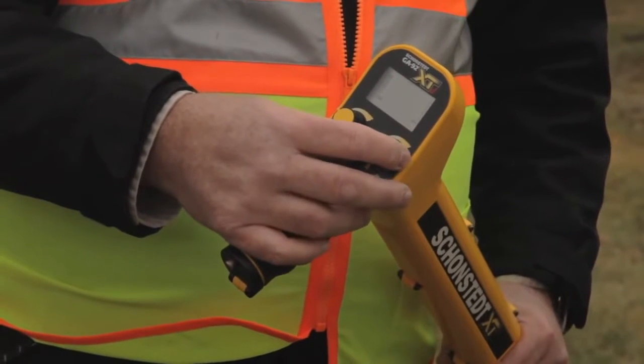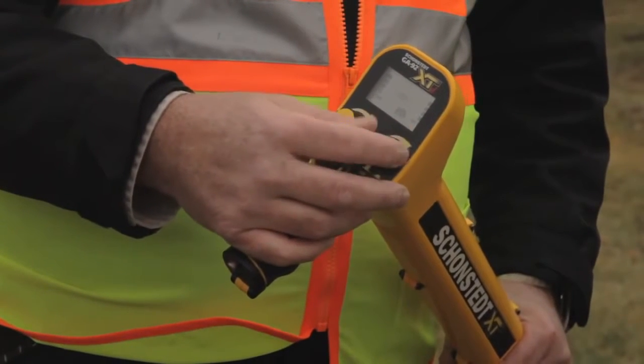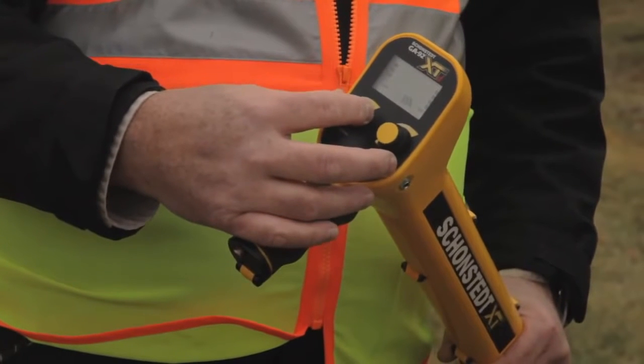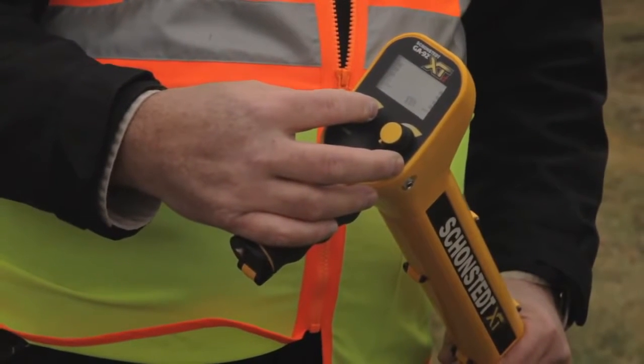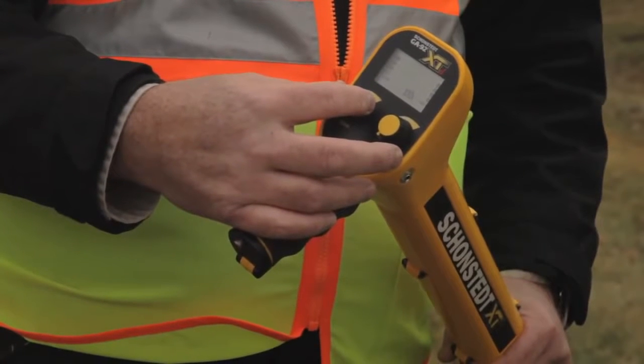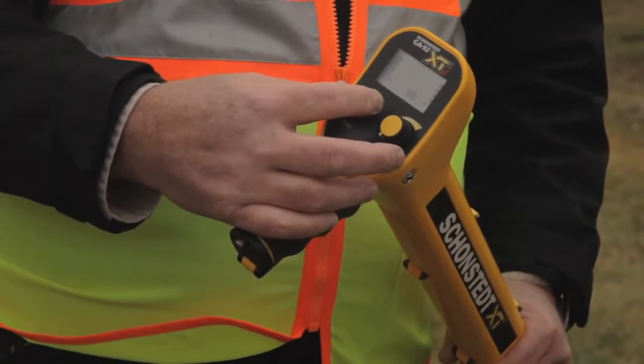There's just two adjustments. One is the speaker volume adjustment, up and down. And the other one is the sensitivity adjustment. This is the adjustment that you'll be using from time to time to adjust for how deep a target is or how big it is.